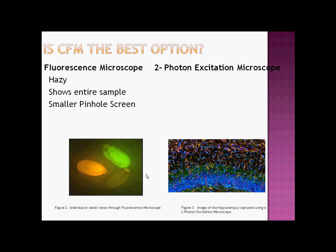The two-photon excitation microscope may be more useful than CFM depending on the situation. The two-photon microscope also uses fluorescence to achieve imaging of live samples. The excitation in this microscope is due to infrared light, which prevents damaging of the cells that could be caused by UV excitation in CFM. It uses two photons to create excitation, which is a technique to increase resolution.